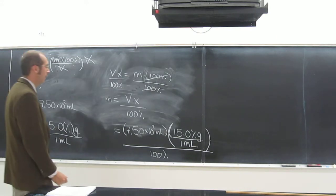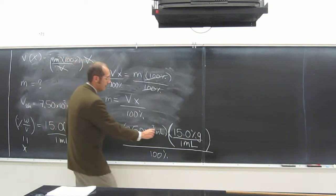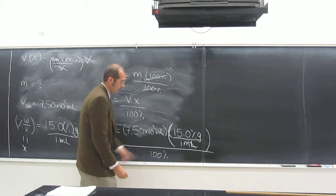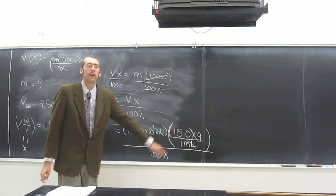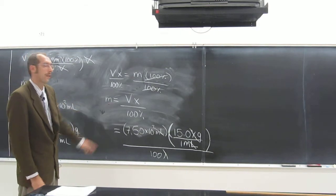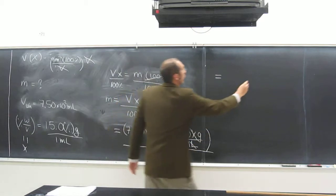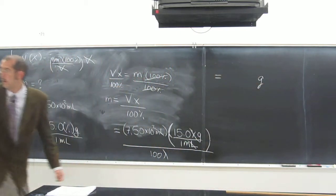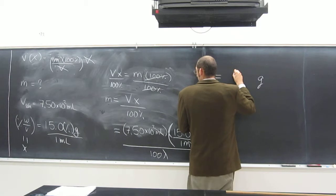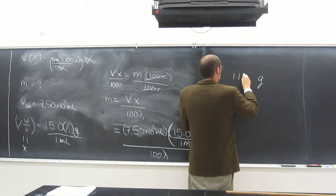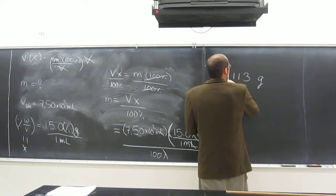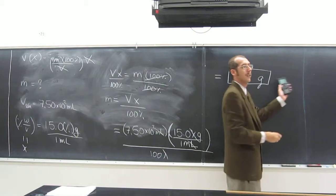So, do all our units cancel out, except for one of them, the one that we want? Mils cancels with mils. Percent cancels with percent. And what are we left with? Grams. Is that what we want? Is that a good mass number? So, we've got grams, and what have we got? 7.5, or, we'll just do 750 times 15. What did you guys get? What was it? I did a 12.5. 113. 113 grams, and if you wanted to, grams of glucose.